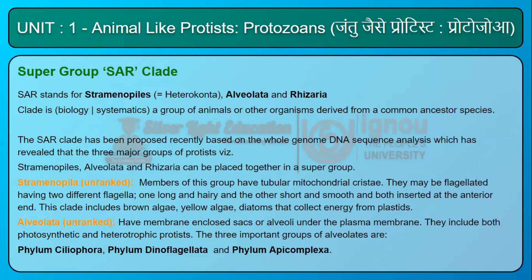Alveolata — unranked, have membrane-enclosed sacs or alveoli under the plasma membrane. They include both photosynthetic and heterotrophic protists. The three important groups of alveolates are: Phylum Ciliophora, Phylum Dinoflagellata, and Phylum Apicomplexa.